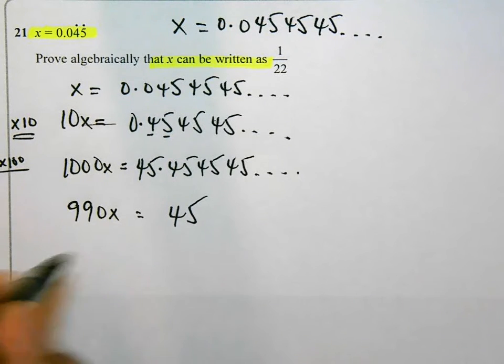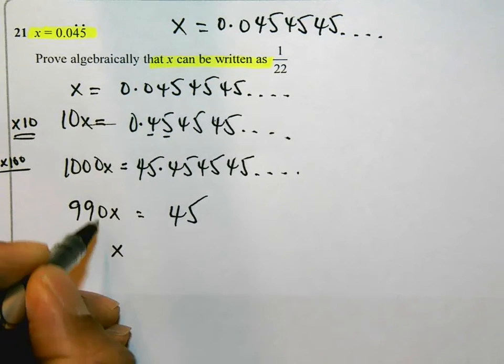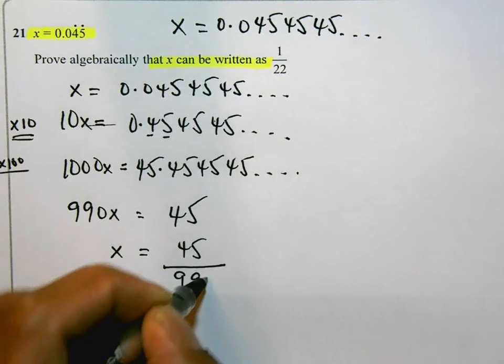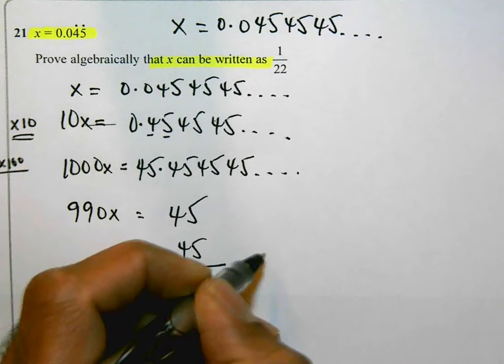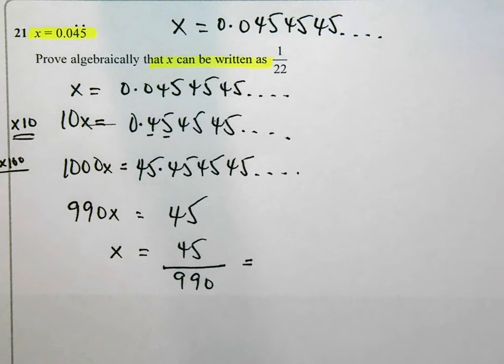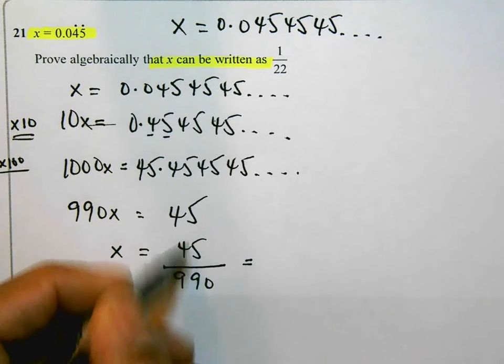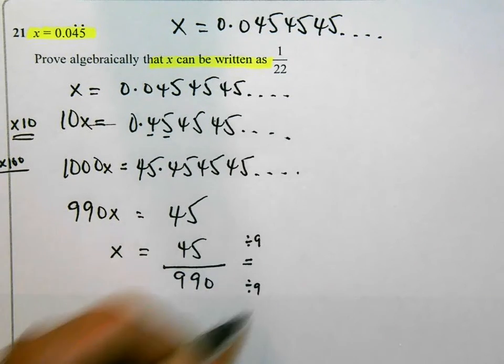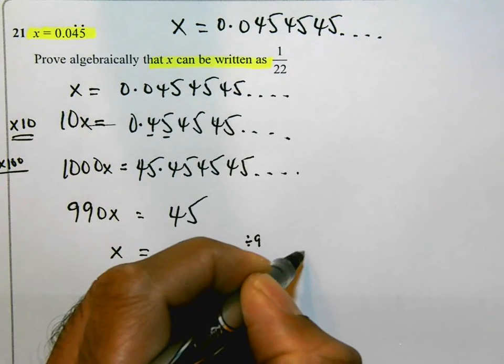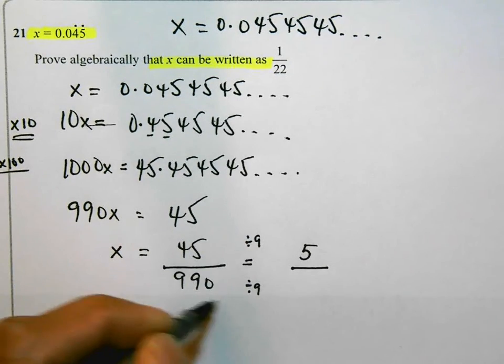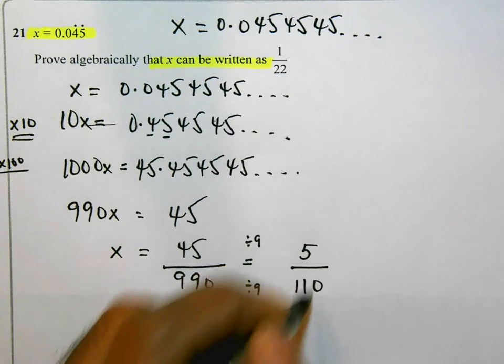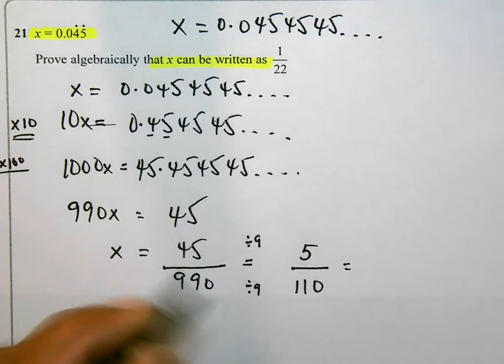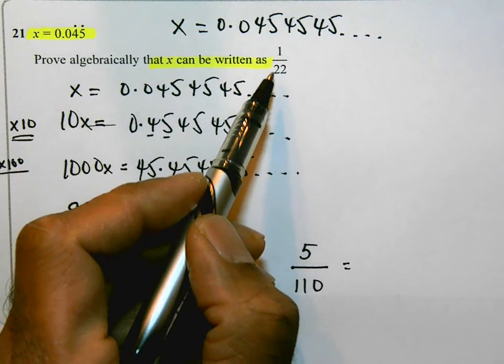Now this is going to help me write x as a fraction. I need to divide by 990, so 45 over 990. How is that going to help me? I can divide the top and the bottom by 9, I know 9 could go into both of them. 45 divided by 9 is 5, 990 divided by 9 is 110. Now remember the question said show that this can be written as 1 over 22.